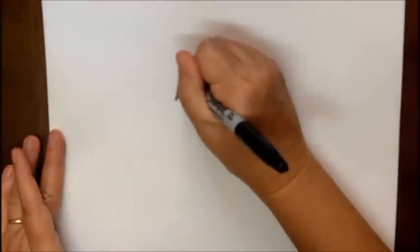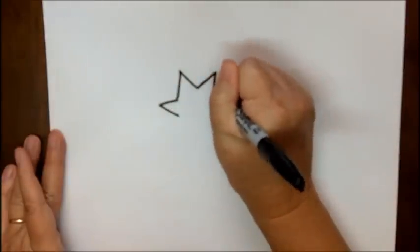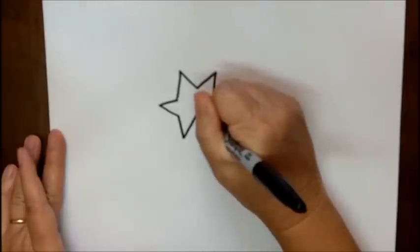We're going to start out with a star shape, so we just have a series of lines that come together like that.